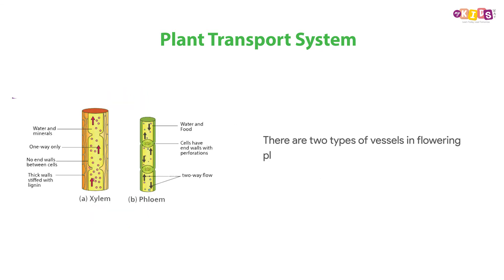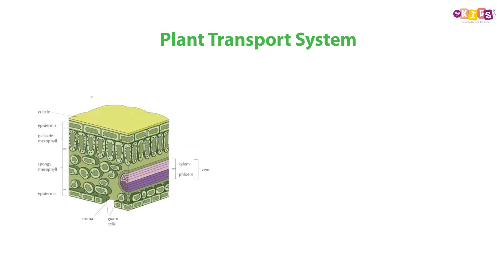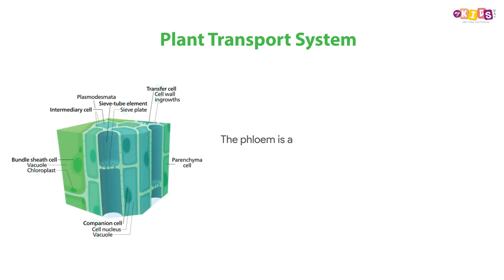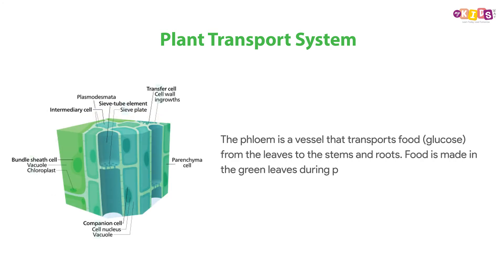There are two types of vessels in a flowering plant: the xylem and the phloem. The xylem is a vessel that transports water and mineral salts from the roots to the leaves. The phloem is a vessel that transports food from the leaves to the stems and roots.